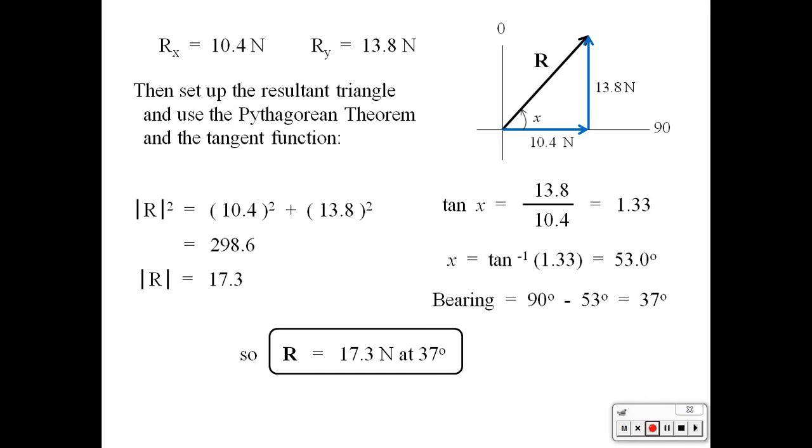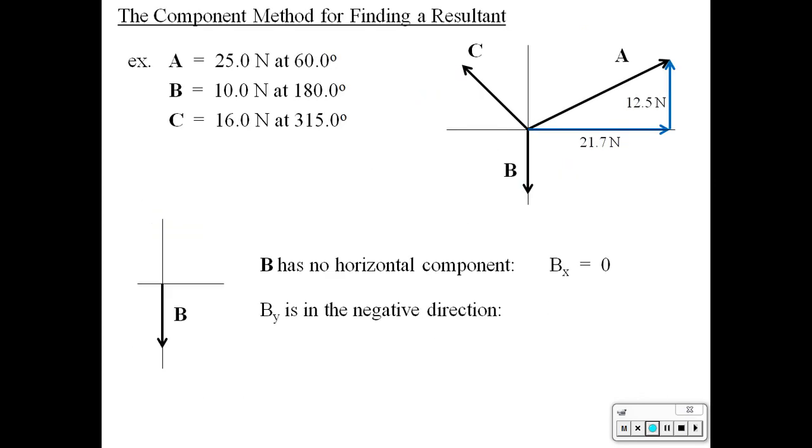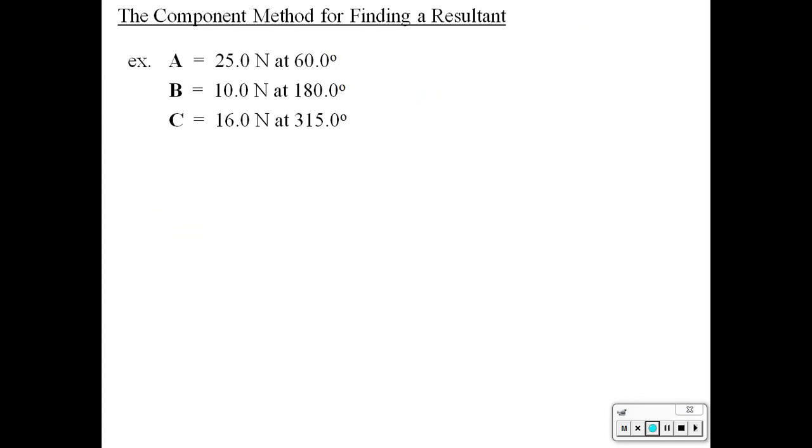And that's the component method of finding a resultant. Now the nice part about this is we can add unlimited numbers of vectors. It's real easy to do. All we need to do is find the x component of each one and the y component of each one and add them to find the x component of R and the y component of R and then go from there. The math is easy and it's the preferred method of finding a resultant of two or more vectors.